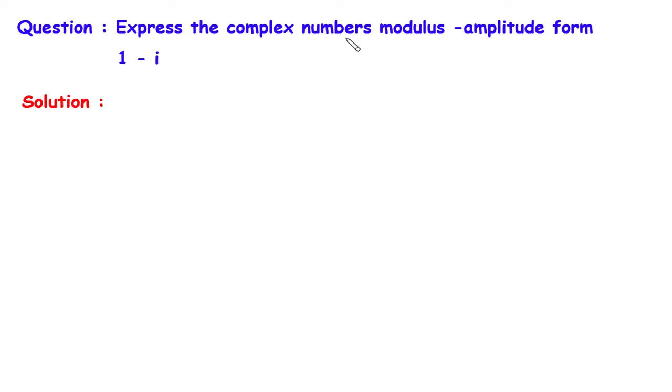Express the complex number in modulus amplitude form: 1 minus i. Solution: let z equals 1 minus i.